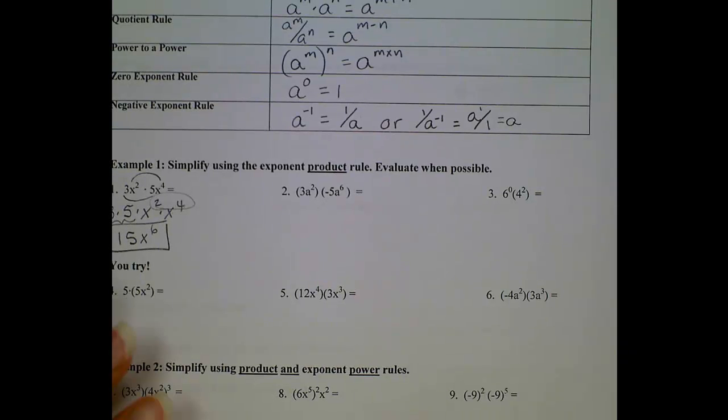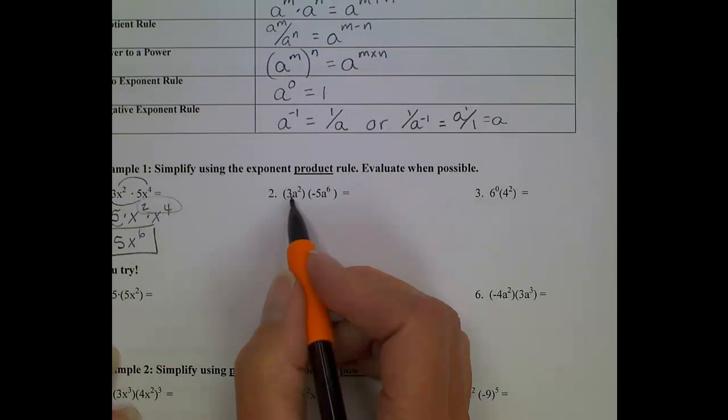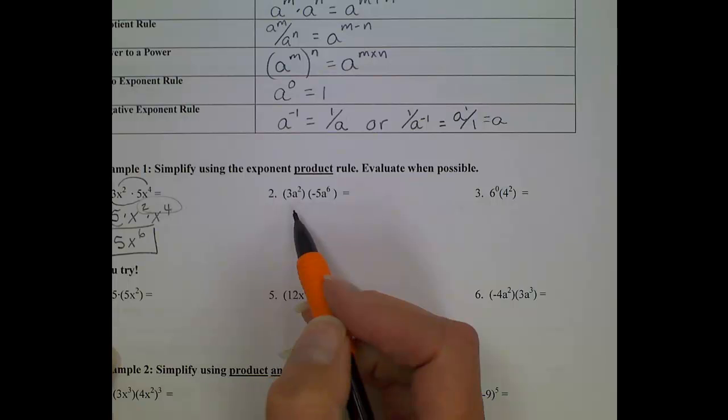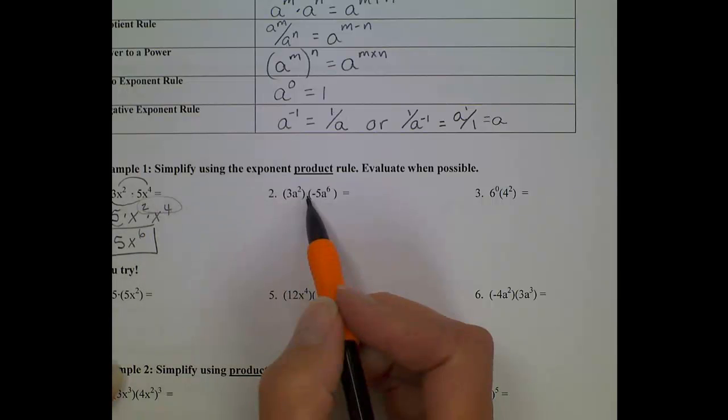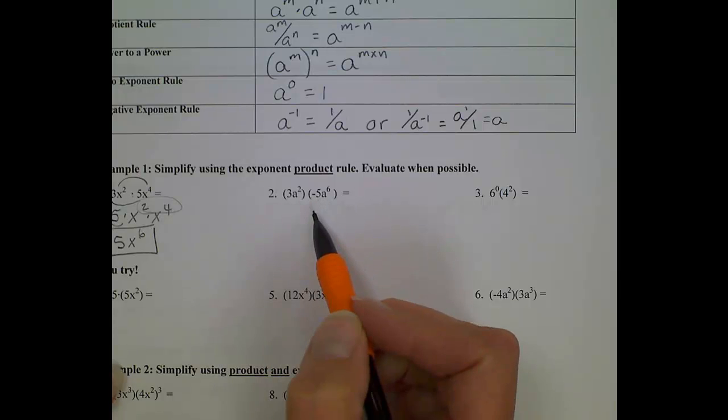Now, number 2, even though it looks different, they're still asking us to perform the same operation. This is multiplication, and parentheses imply multiplication. I think they put this problem in parentheses so we wouldn't get confused with the negative 5 and want to turn this into a subtraction problem.